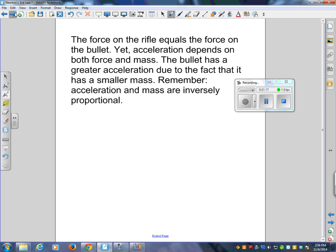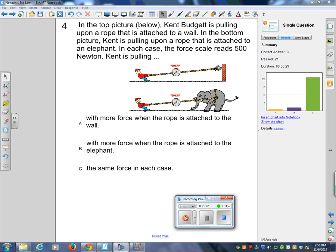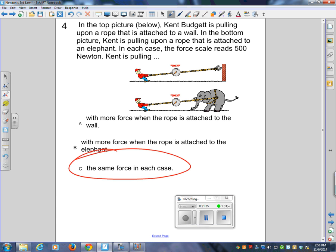The force on the rifle equals the force on the bullet. Yet acceleration depends on both force and mass. The bullet has a greater acceleration due to the fact that it has a smaller mass. Remember, acceleration and mass are inversely proportional. We finally get it! If you don't challenge your brain, Lucas, you're not going to get anywhere.